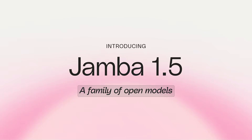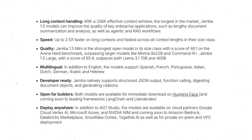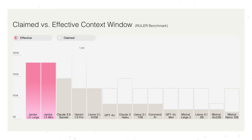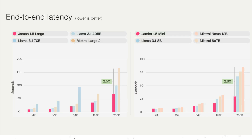The next one is Jamba 1.5 from AI21 Labs. We covered when they announced the Jamba model but it wasn't released at the time — now they've decided to release Jamba Large (version 1.5) and Jamba Mini, both available on Hugging Face as open weights. So we've now seen three alternative architectures in this list: Zephyra, Rene, and Jamba — all of them are not pure transformer-based architectures.